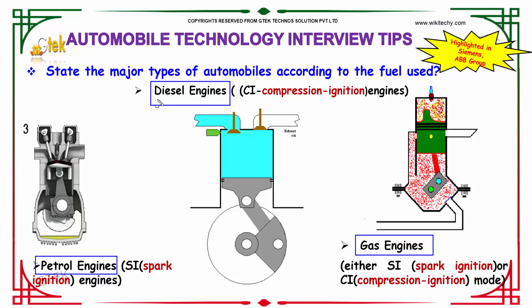Considering diesel engines, the fuel used is CI, i.e., compression ignition engine types. In terms of petrol engines, it will be spark ignition, i.e., SI engines. In terms of gas engines, it will be either spark ignition or compression ignition mode.